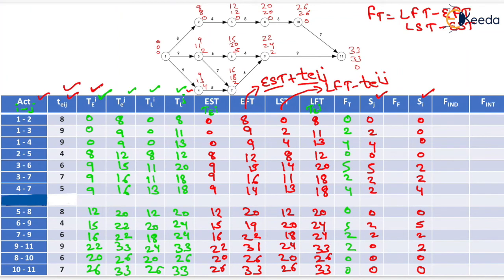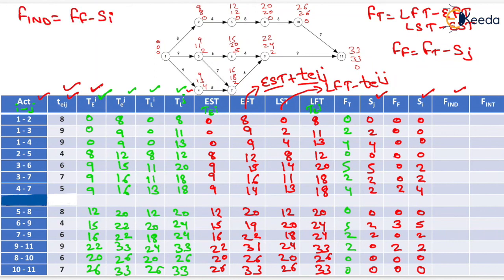Free float equals total float minus slack of the j-th event. The free float values are: 0, 0, 0, 0, 0, 0, 2, 0, 3, 0, 2, 0, 0. Independent float equals free float minus slack of the i-th event, giving: 0, 0, 0, 0, −2, −2, −2, 0, 0, 0.